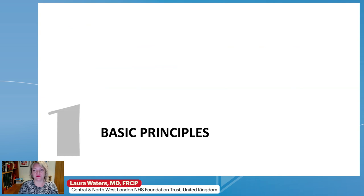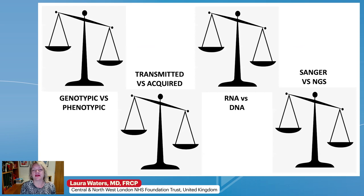Starting with the basic principles, we can think about resistance tests in different ways: genotypic or phenotypic, looking for transmitted or acquired resistance, sequencing RNA or DNA, and finally Sanger population or next generation sequencing.